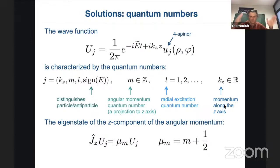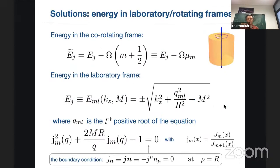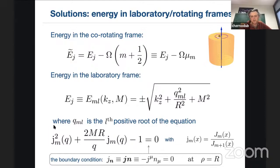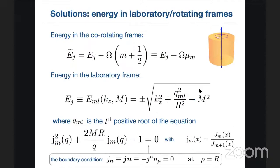We find wave function solutions characterized by particle/antiparticle quantum numbers, angular momentum, radial excitation number, and momentum along the z-axis. Importantly, we must introduce boundaries — boundaries are very important. Once we introduce boundaries, we can identify the energy in the co-rotating frame, which is the energy in the laboratory frame minus the term corresponding to Ω times the total angular momentum — both orbital and spin parts.